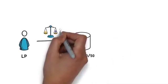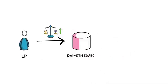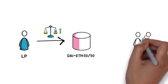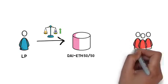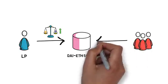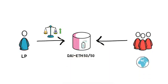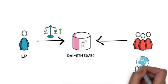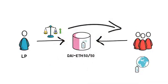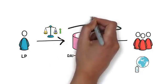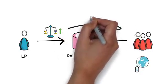If ETH goes up in value, the pool has to rely on arbitrageurs continually ensuring that the pool price reflects the real-world price to maintain the same value of both tokens in the pool. This basically leads to a situation where profit from the token that appreciated in value is taken away from the liquidity provider.